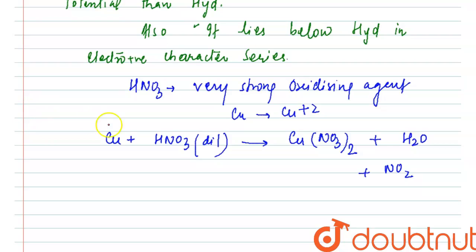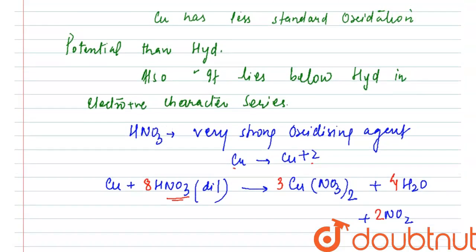To balance this reaction, we will have to take 8 moles of HNO3, 3 moles of copper, then 3 moles of copper nitrate, 4 moles of water and 2 moles of nitrogen dioxide. Just because of the nature of HNO3 that is very strong oxidizing agent, it oxidizes copper to Cu plus 2. This is the reason why it dissolves in HNO3 taken dilute.